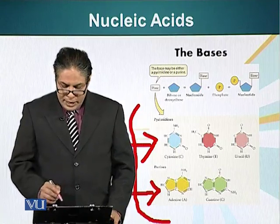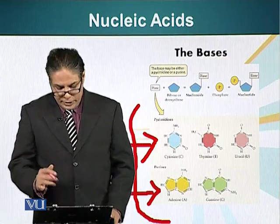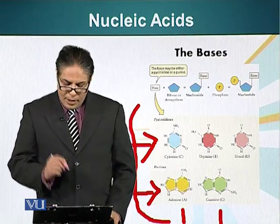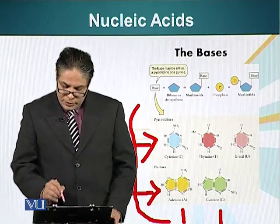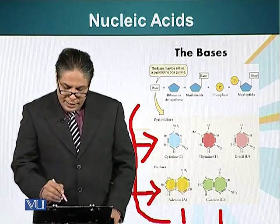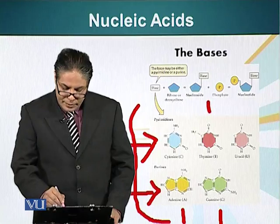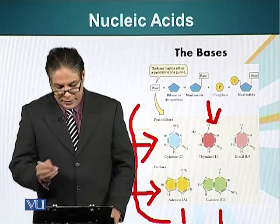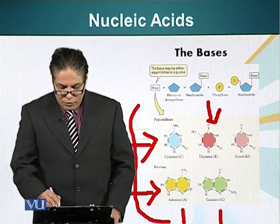Both purines — adenine and guanine — are present in both DNA and RNA. However, in pyrimidines, thymine is not present in RNA; it is present in DNA. In RNA, in place of thymine, we have uracil.